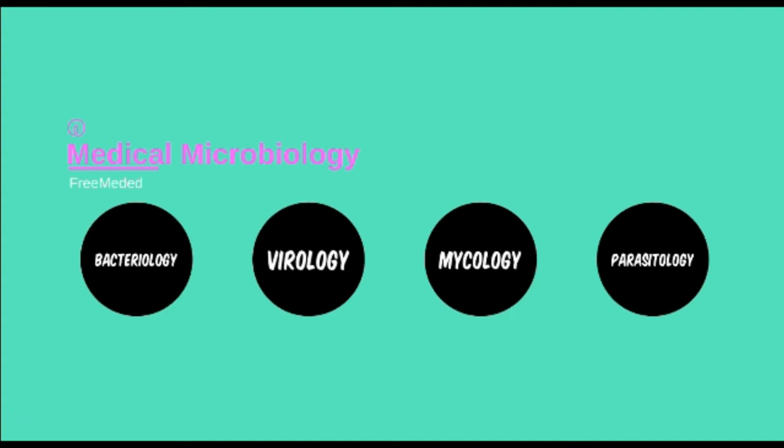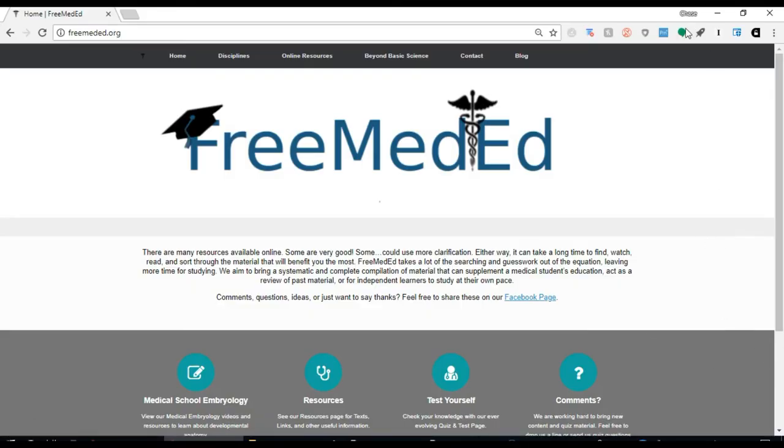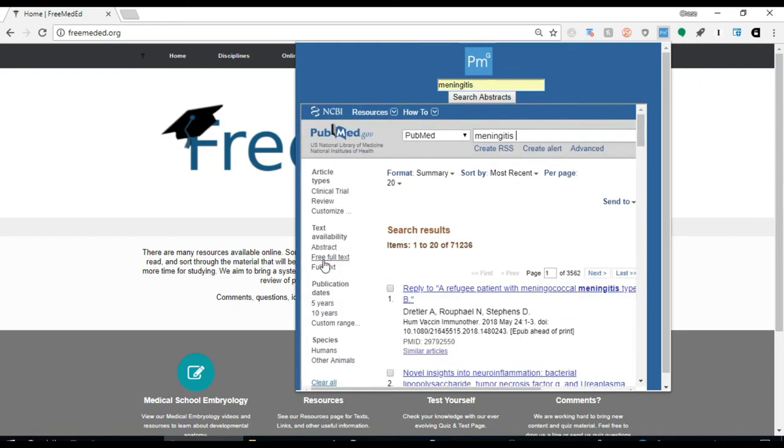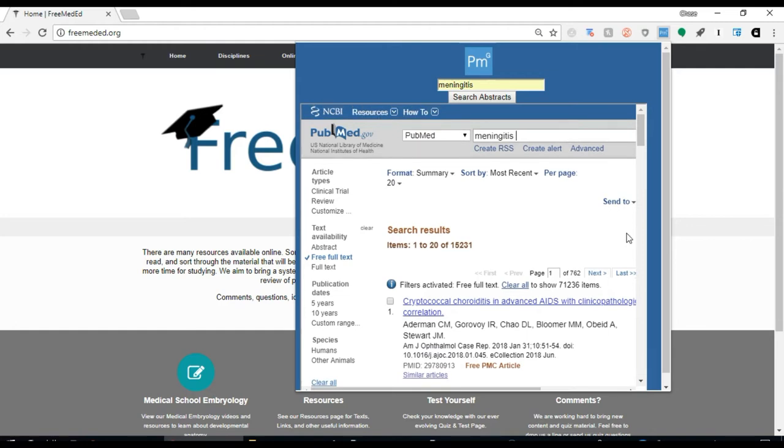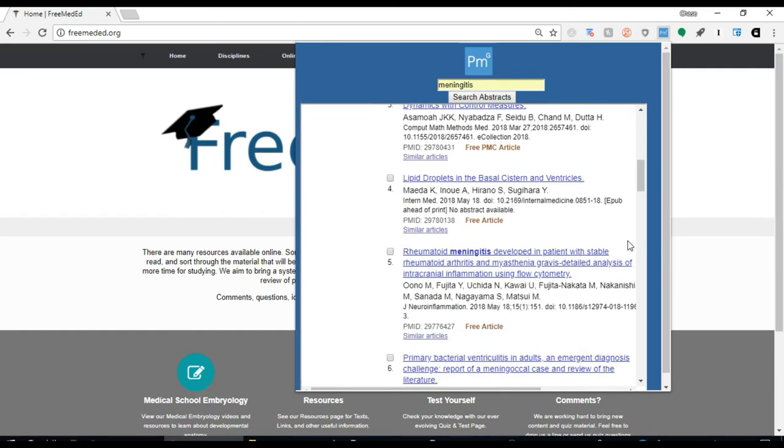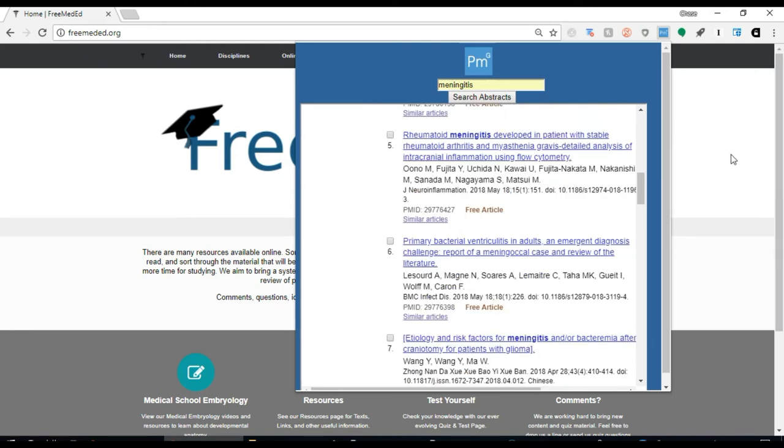Before we start, I recommend that every learner watching these videos download the PubMedGenius extension for your web browser. This will allow you to quickly look up peer-reviewed scientific journals on any topic discussed in this or other medical and scientific educational material. You may get lucky sometimes with a wiki or Google search, but this little extension will help make sure that you receive the most up-to-date and relevant material.